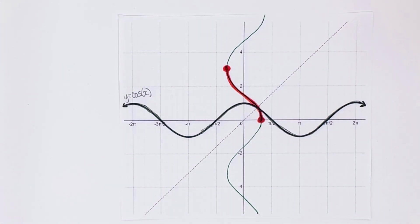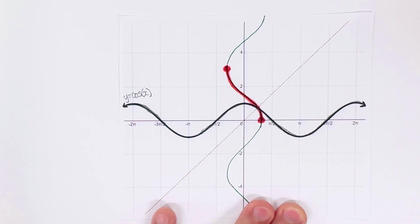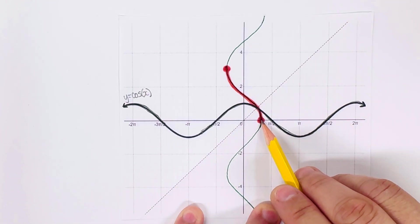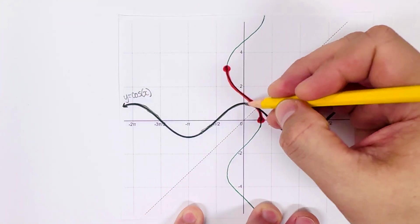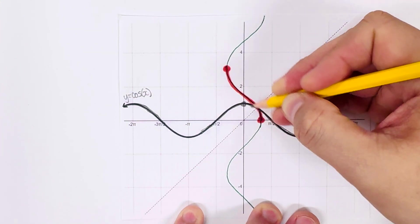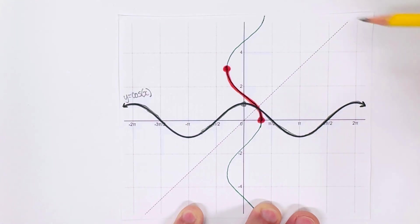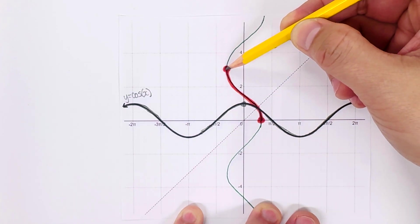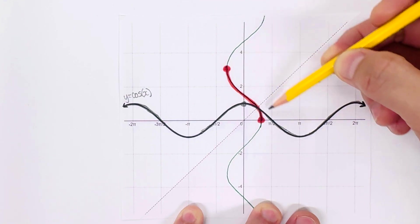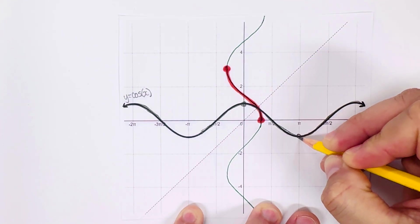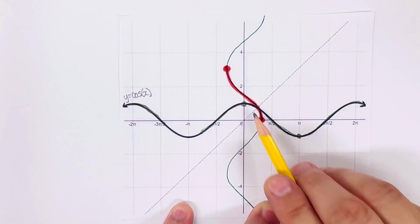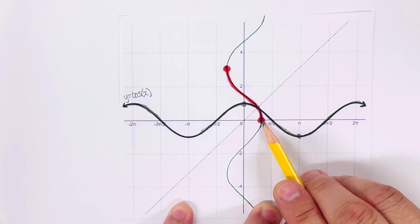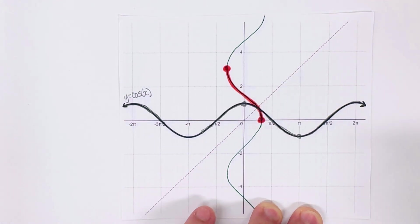With the restriction applied, the green graph is now a function. Let's determine the coordinates for the points on the red graph. We remember that these points are reflections of each other along the y equals x line, so we need to determine the coordinates of those dots on the red graph.